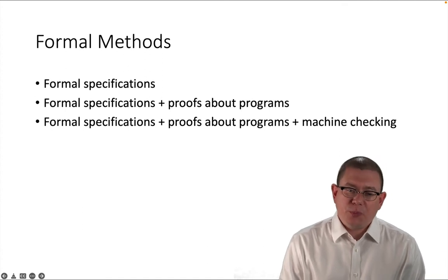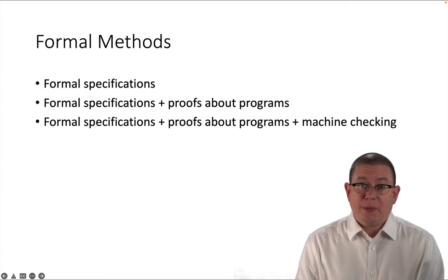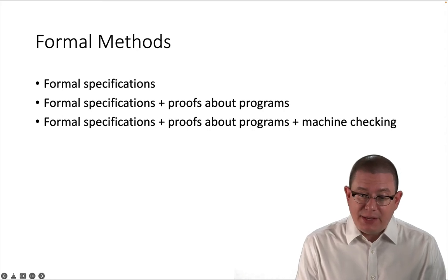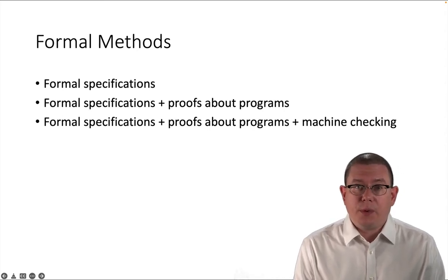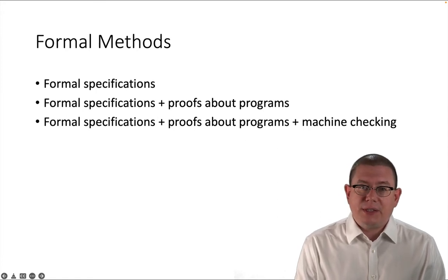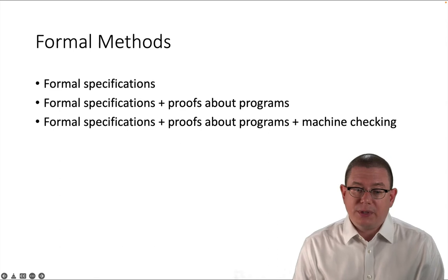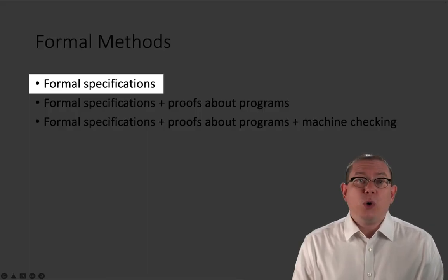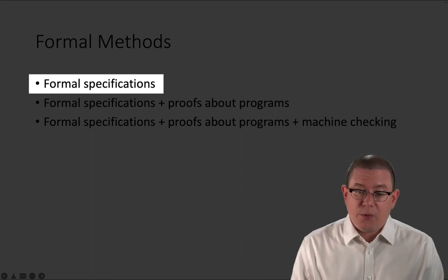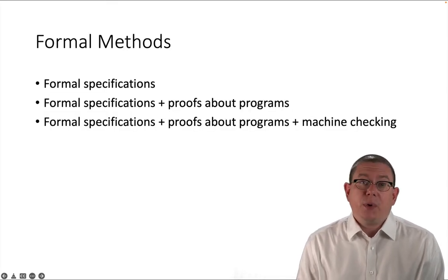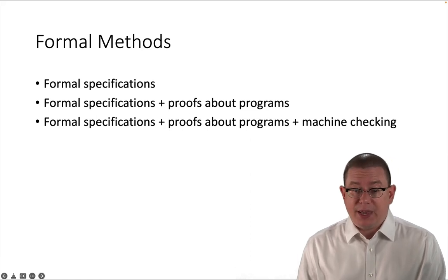Dijkstra's desire for rigorous proof was shared by many at the NATO conference. Their work in the 60s and 70s gave birth to so-called formal methods of software development. Formal methods emphasize the use of logic and proof to create specifications and programs. There's a range of formality that can be employed — maybe only the specifications are formal, and the programs are developed as usual, informally, but with the aid of having formal specifications.